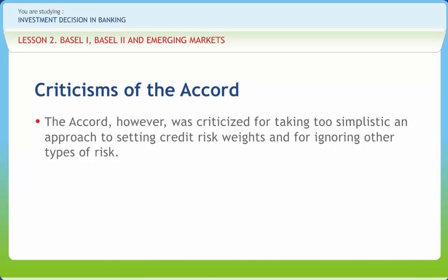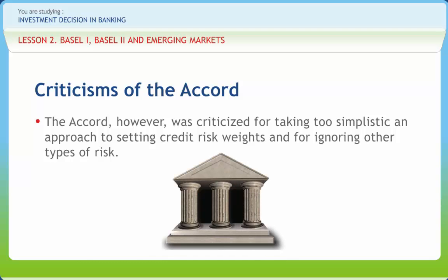The accord, however, was criticized for taking too simplistic an approach to setting credit risk weights and for ignoring other types of risk. Risk weights were based on what the parties to the accord negotiated rather than on the actual risk of each asset. Risk weights did not flow from any particular insolvency probability standard and were, for the most part, arbitrary. The requirements did not explicitly account for operating and other forms of risk. Except for trading account activities, the capital standards did not account for hedging, diversification, and differences in risk management techniques. Advances in technology and finance allowed banks to develop their own capital allocation internal models in the 1990s.